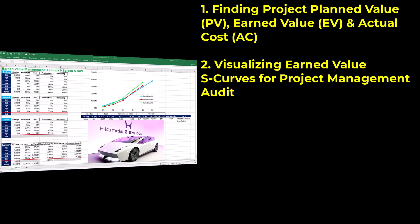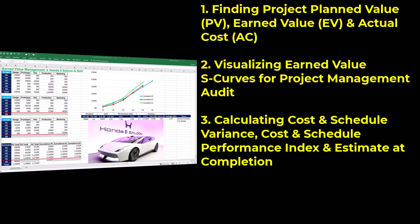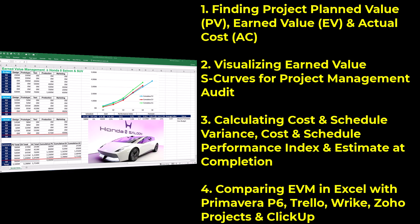Step 1 covers visualizing earned value S-curves for project management audit, calculating cost and schedule variance, cost and schedule performance index, and estimated completion. Step 4 compares EVM in Excel with Primavera P6, Trello, Wrike, Zoho Projects, and ClickUp.